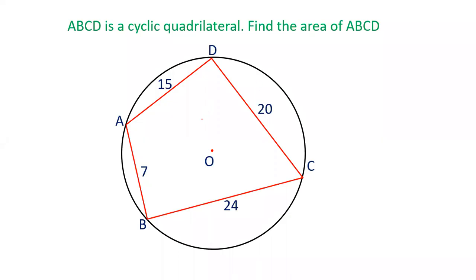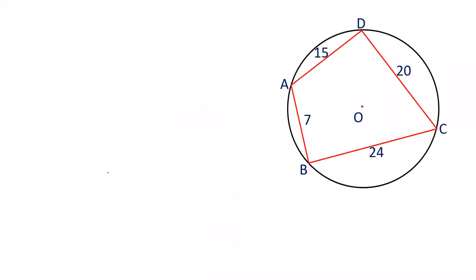Hello friends, welcome to our YouTube channel SSC Selector. In this video, there is a circle and a cyclic quadrilateral formed ABCD with all its four points on the circle. The sides of the quadrilateral are given, and we have to calculate the area of this quadrilateral. So friends, let's see how we can solve this question.